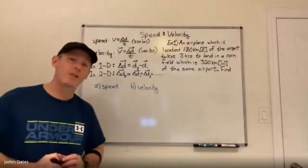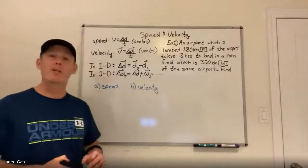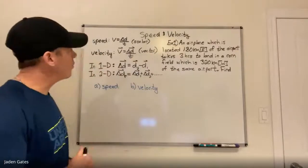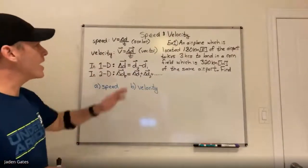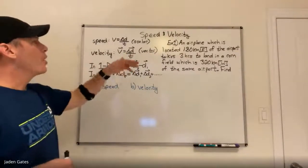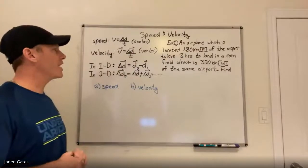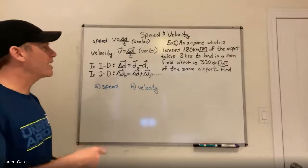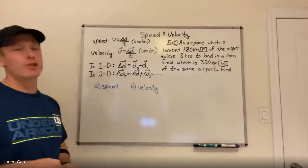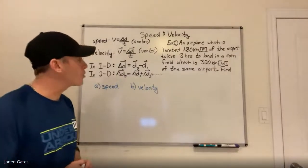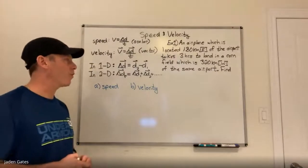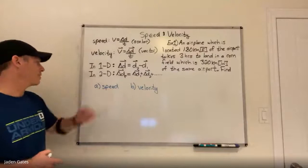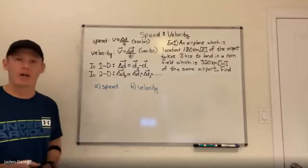We're going to start with a grade 11 type, one-dimensional question. Example one: an airplane located 180 kilometers east of the airport takes three hours to land in a cornfield which is 320 kilometers west of the same airport. Find A, the speed, and B, the velocity.